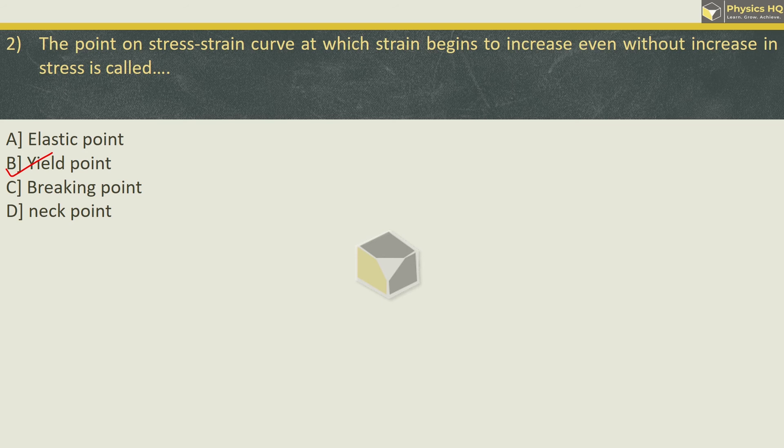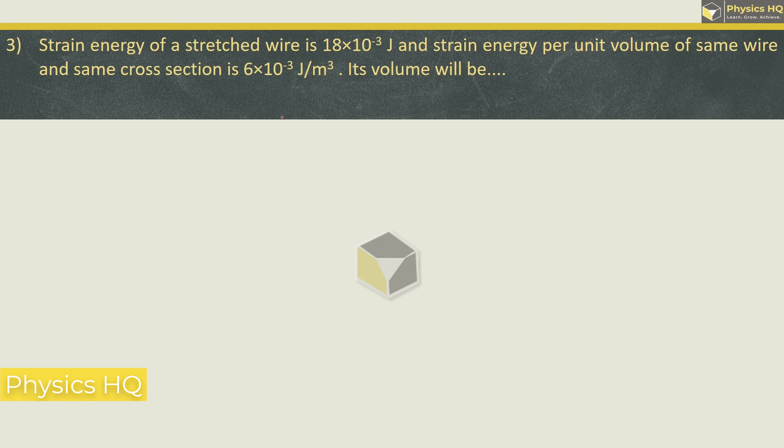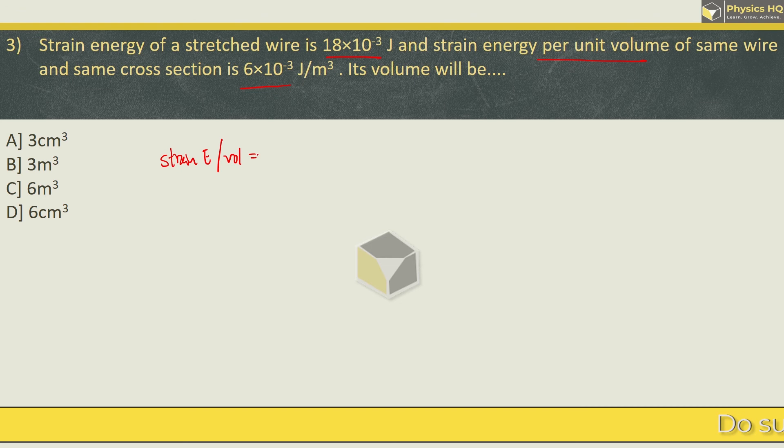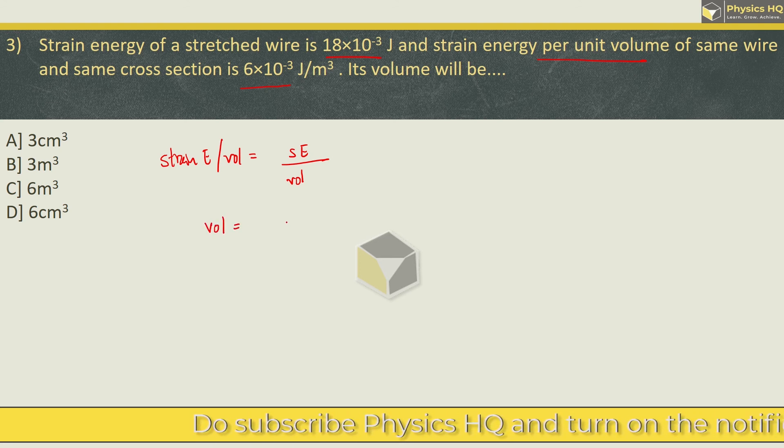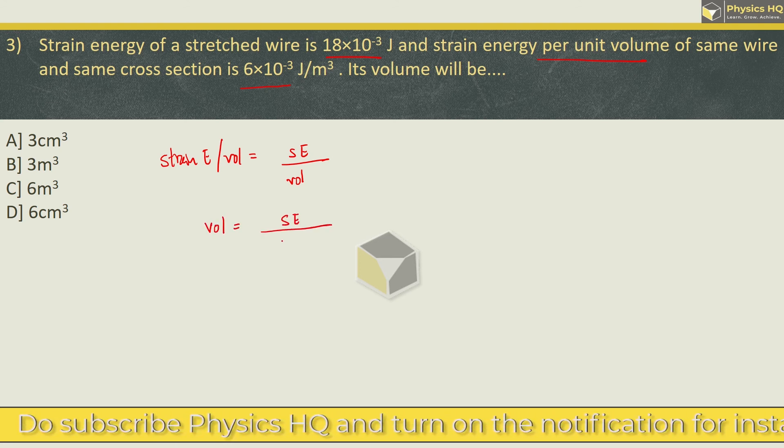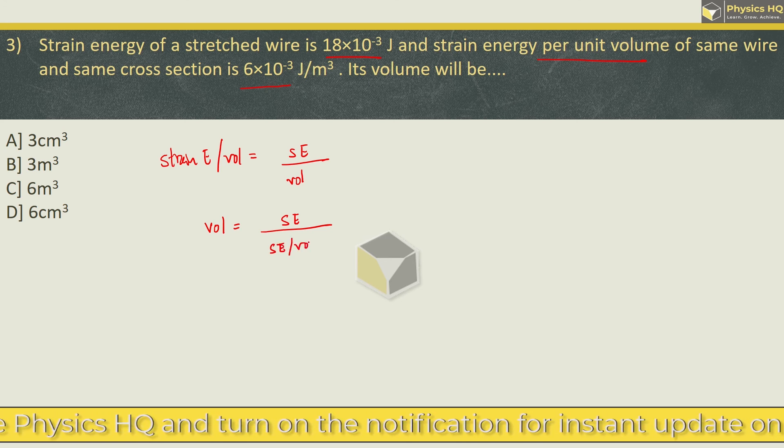Let us check out the next MCQ. Strain energy of a stretched wire is 18×10⁻³ Joule and the strain energy per unit volume of the same wire and same cross section is 6×10⁻³ Joule per meter cube. Its volume will be - these are the options. Now strain energy per unit volume is given by strain energy divided by the volume. We are supposed to find the volume, so rearranging, volume will be given by strain energy divided by strain energy per unit volume.